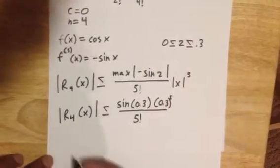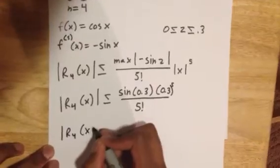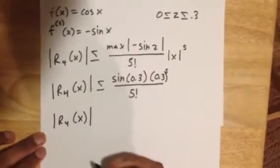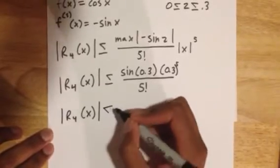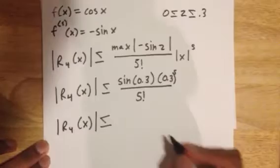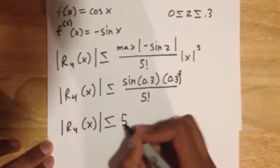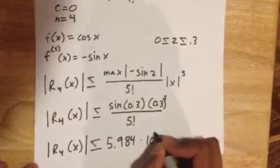Now if we plug this into a calculator, we get that the upper error bound for the fourth-degree Maclaurin approximation of cos(0.3) is less than or equal to 5.984 × 10⁻⁶.